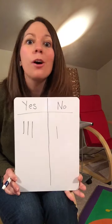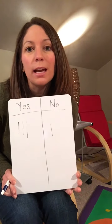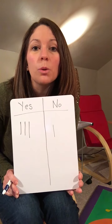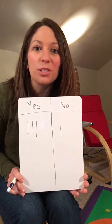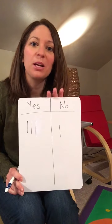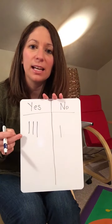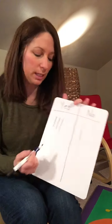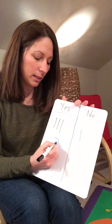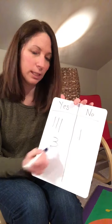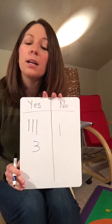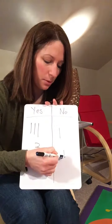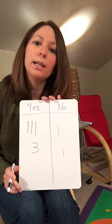When you're all done and you've asked everybody in your house, you're going to count your marks. On the yes side I have one, two, three — and I write the number three. On the no side I just have one, so I'm going to write the number one.